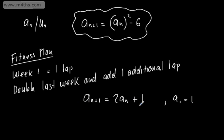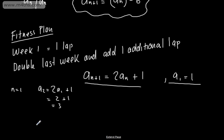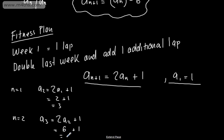Let's look at generating some terms in this sequence. When n is equal to 1, we substitute in and use this information. a2, the second term, will be 2 lots of a1 plus 1. Well, a1 is 1, so that's 2 plus 1, which gives me 3. When n is equal to 2, this gives us the third week. The third term will be 2 lots of a2 plus 1, so that's 2 lots of 3, which is 6, plus 1, giving me 7.